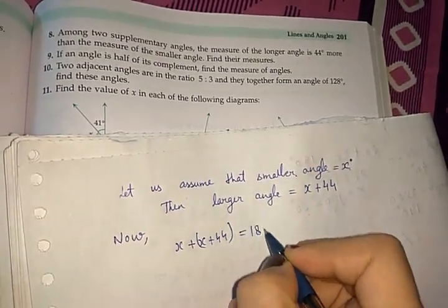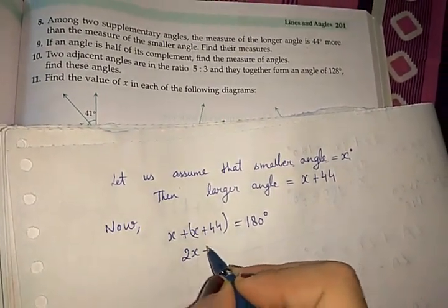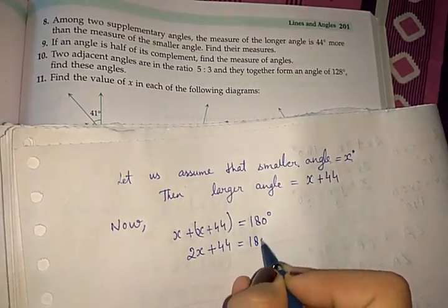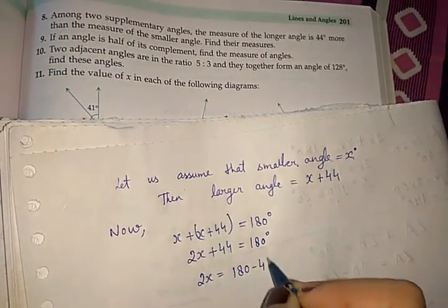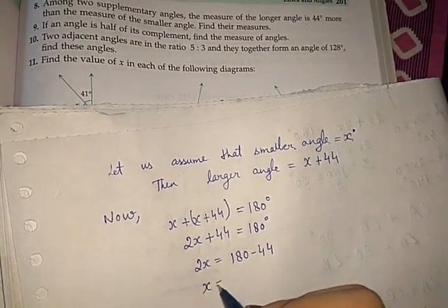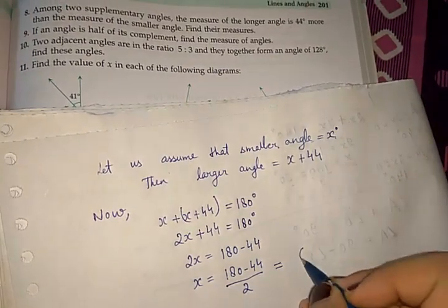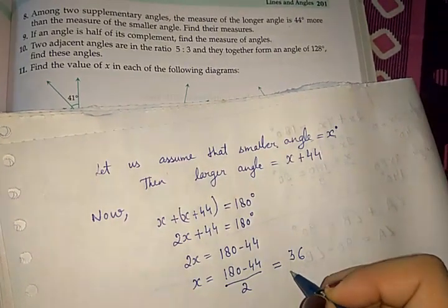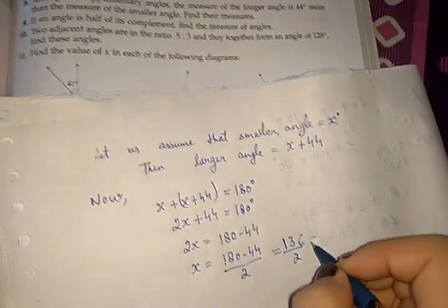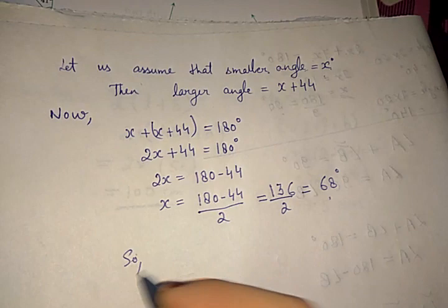Solving: x plus x plus 44 equals 180 degrees, so 2x plus 44 equals 180. Taking 44 to the other side: x equals (180 minus 44) divided by 2, which gives 136 divided by 2, equals 68 degrees. So the smaller angle is 68 degrees.